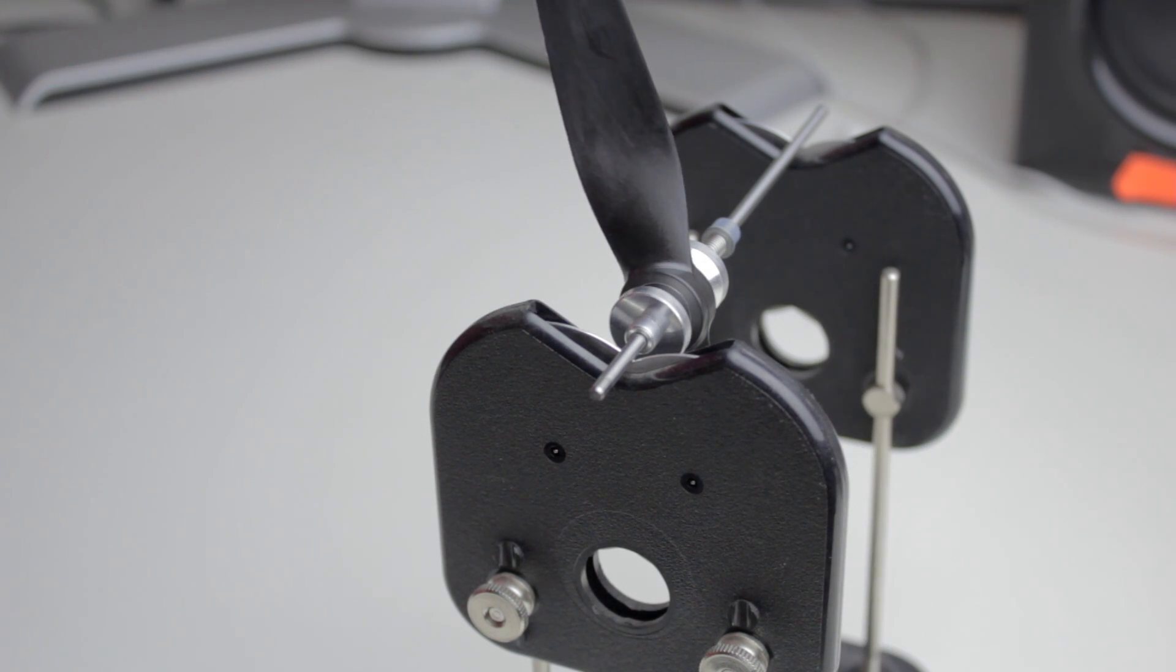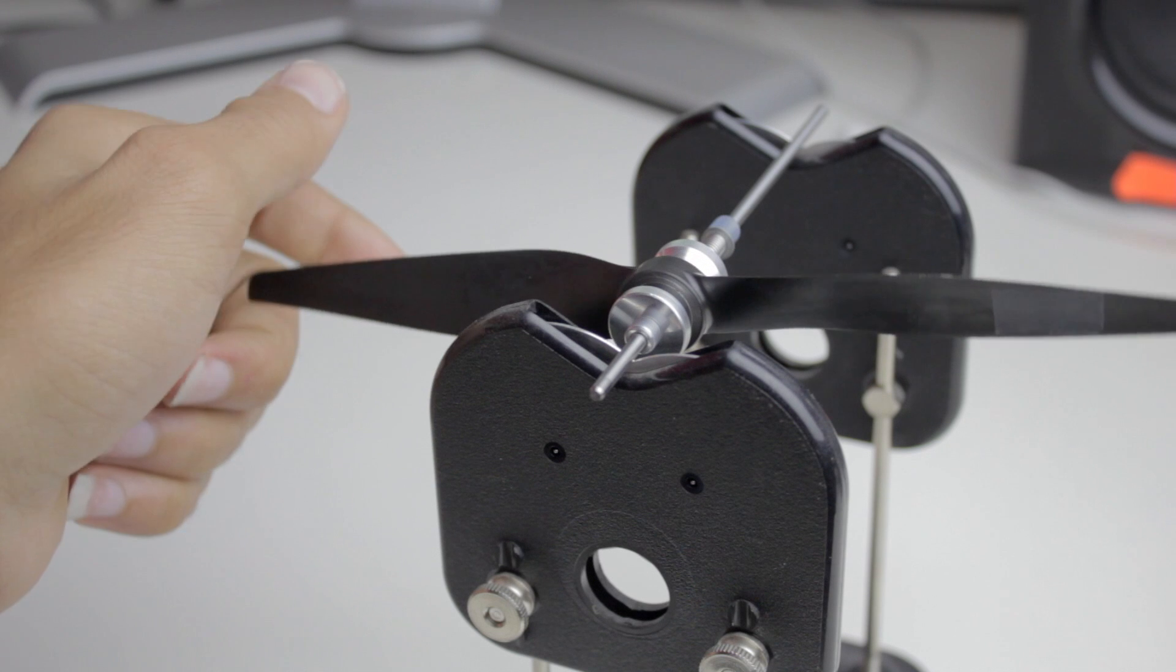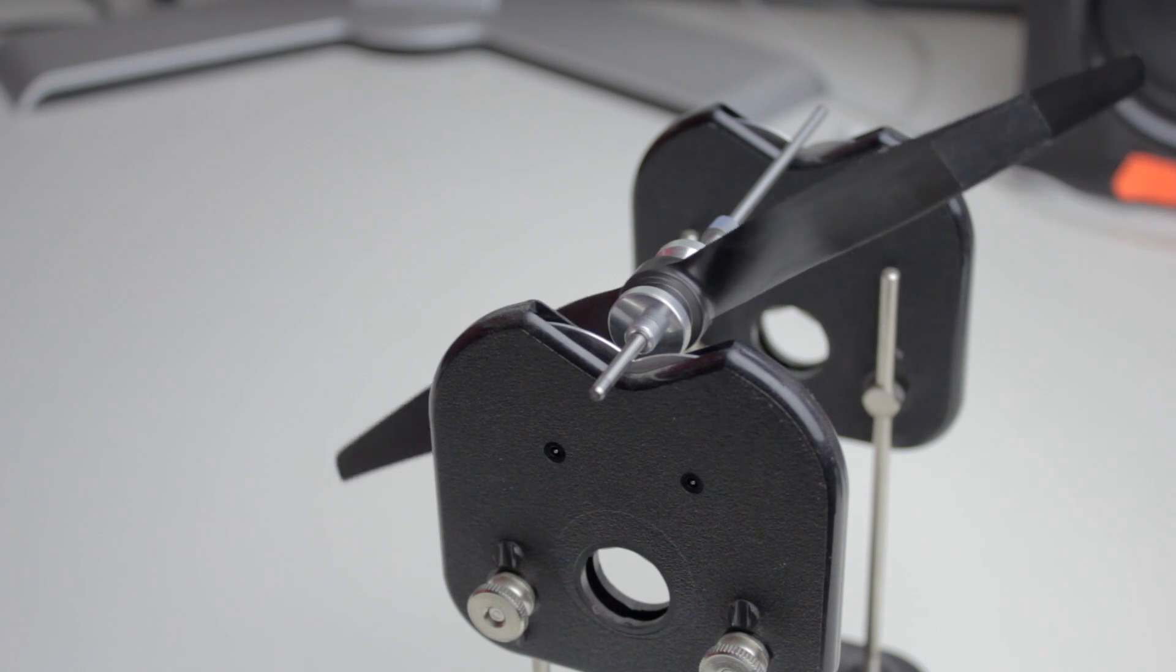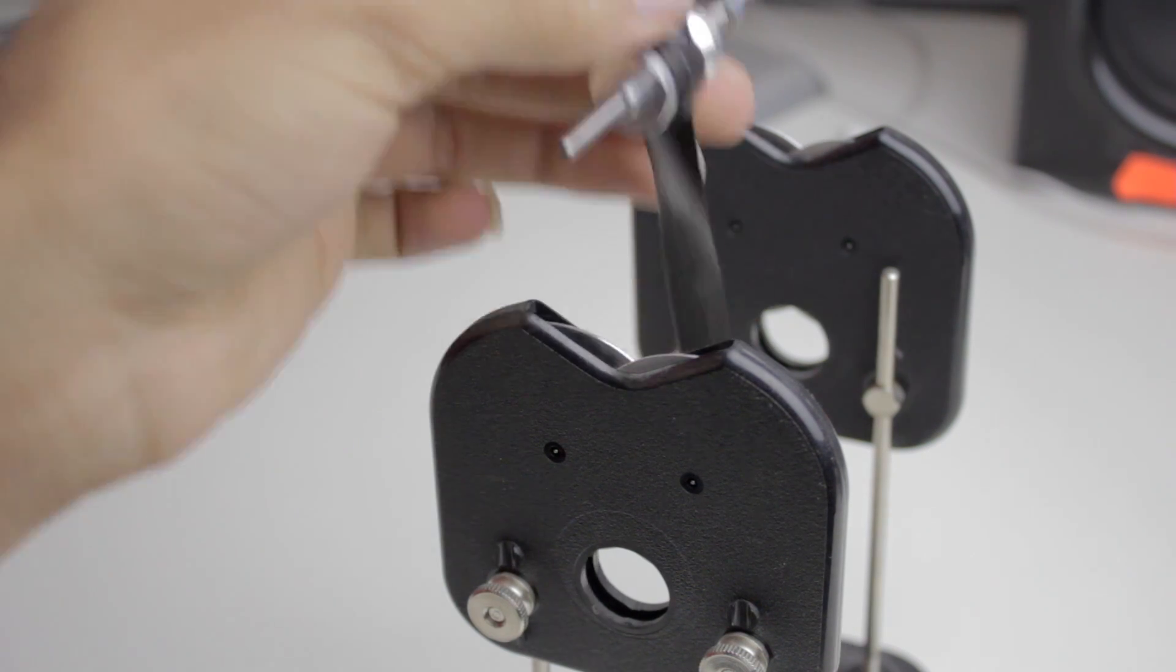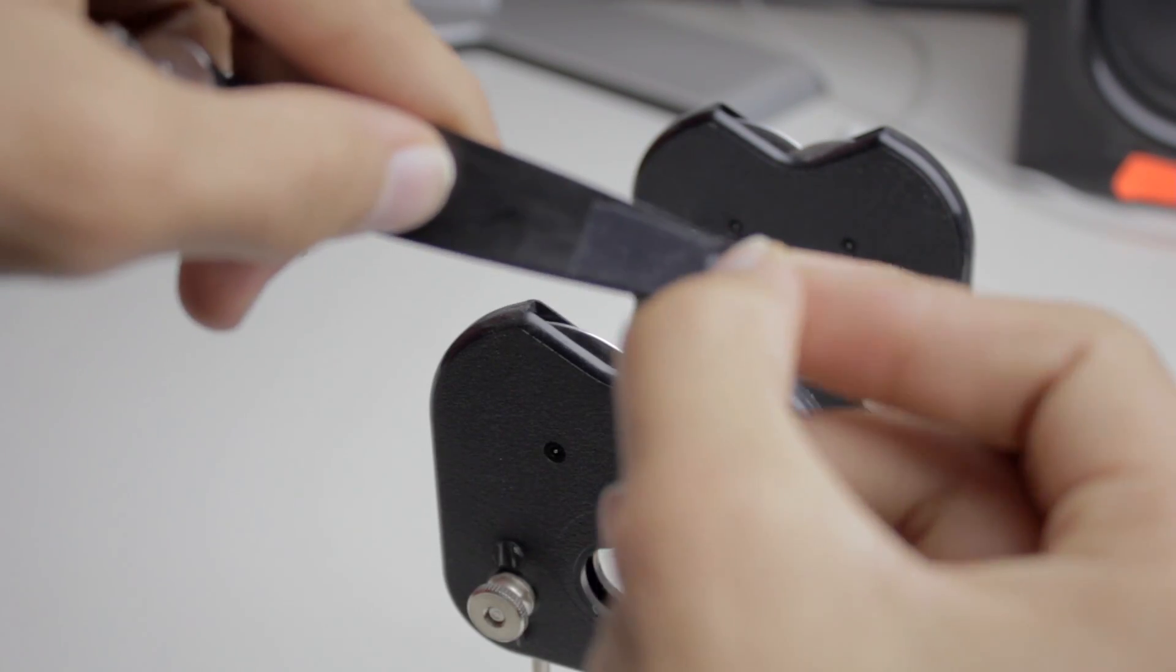The first thing that you're going to notice once you get it on there is that one of the blades is going to fall. Whichever blade falls is the blade that's too heavy. To counteract that, all we need to do is put tape on whichever side isn't falling.